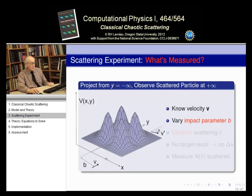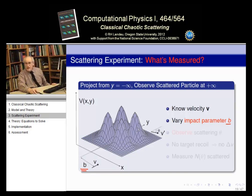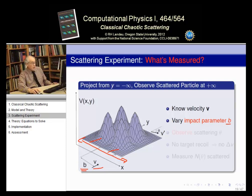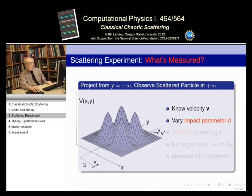Classically, you talk about the impact parameter b. That's the distance from the center axis — this is our x equals zero axis, and b is just the distance from that axis. We will vary b to be positive and negative. So we can vary the velocity of the particle and where we send it — toward which peak, or down the valley in the middle.